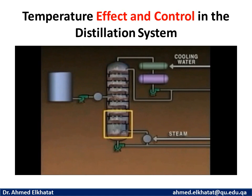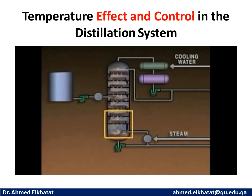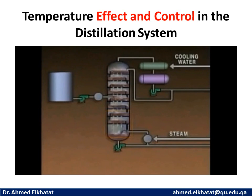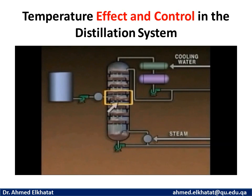The temperature at the bottom of the tower is also important. It is usually slightly below the boiling point of the heavier component. If the temperature at the bottom is too high, more of the heavier components will vaporize and move up the tower instead of remaining as a liquid. If the temperature at the bottom is too low, less of the lighter components will vaporize and move up the tower. Another place where temperature control is important is at the feed point. The temperature at the feed point should be within the boiling range of the mixture and close to the temperature of the feed tray. The lower the feed tray is in the tower, the higher its temperature will be.